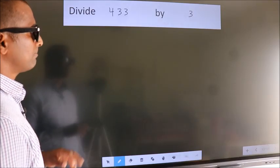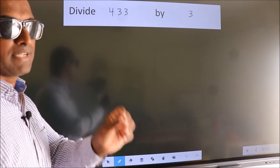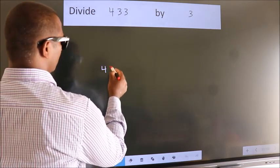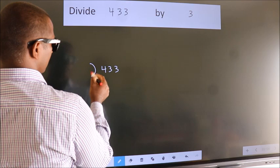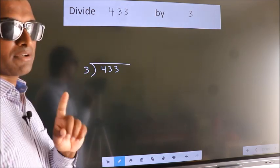Divide 433 by 3. To do this division we should frame it in this way. 433 here, 3 here. This is your step 1.